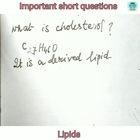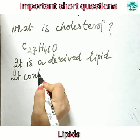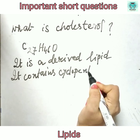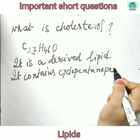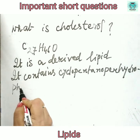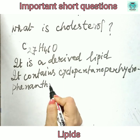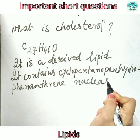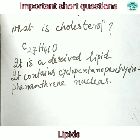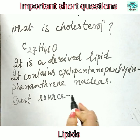Cholesterol contains the cyclopentano perhydrophenanthrene nucleus. The best source of cholesterol is the egg yolk, though other sources are also available.